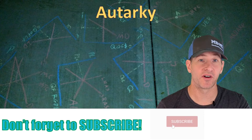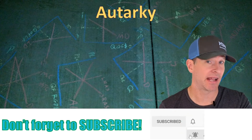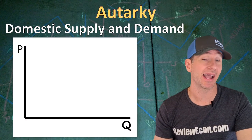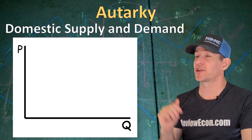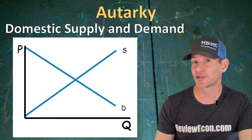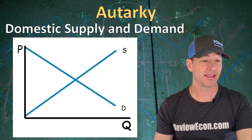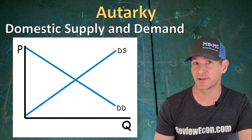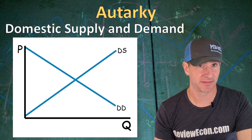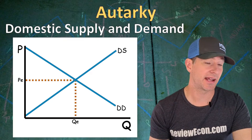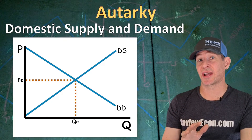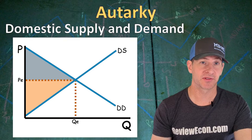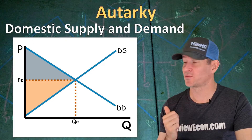So far within this unit, we've been focusing on autarchy — that is when countries are independent and they don't trade with other countries in the world. We're going to start off this lesson with that assumption. We have the domestic supply and demand. With our supply and demand graph, we have price on the y-axis and quantity on the x-axis. We have an upward sloping supply curve and downward sloping demand curve — these are our domestic supply and domestic demand. We have our domestic equilibrium price and quantity, along with consumer surplus and producer surplus, which together form the economic surplus within this domestic market.